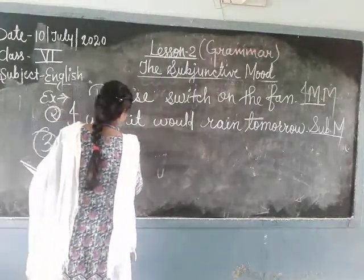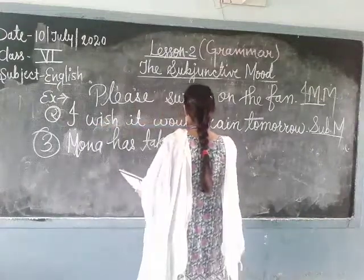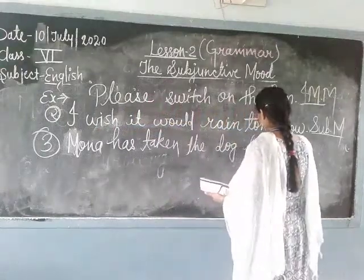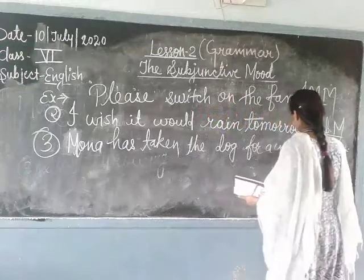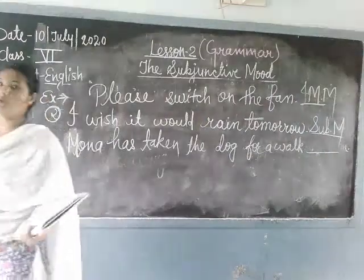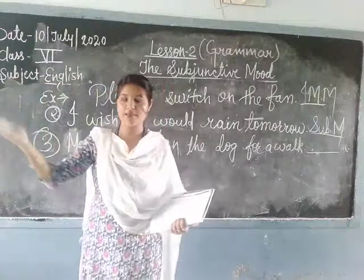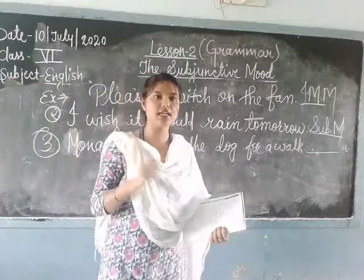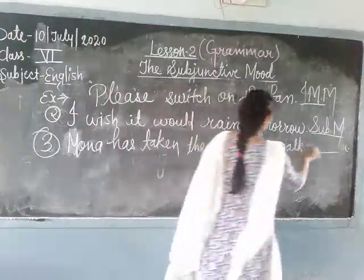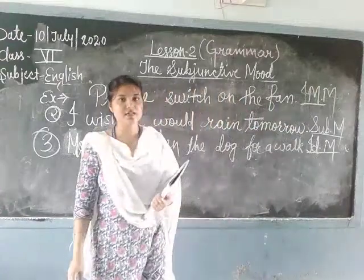Now third example: 'Mona has taken the dog for a walk.' Mona apne dog ko walk par lekar ja chuki hai. So this is a fact. You can verify it — it is a real thing that has happened. So this is a real fact, and indicative mood identifies real facts.